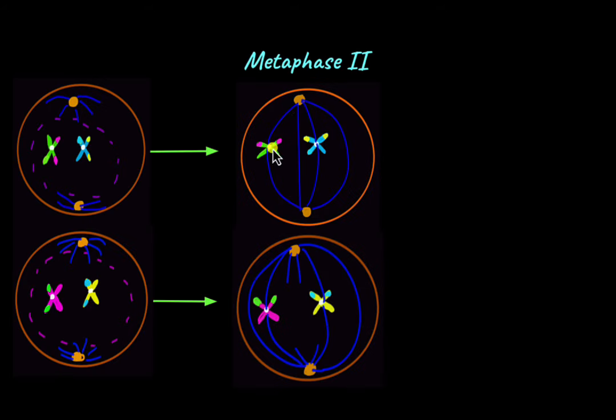In metaphase 2, the homologous chromosomes are arranged at the metaphase plate, an imaginary line at the center of the cell, and fully the microtubules are attached to the kinetochores of the chromosomes. This microtubule from this end of the centrosome attaches to this sister chromatid. This microtubule from this centrosome attaches to this sister chromatid.